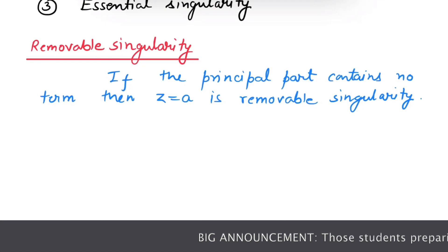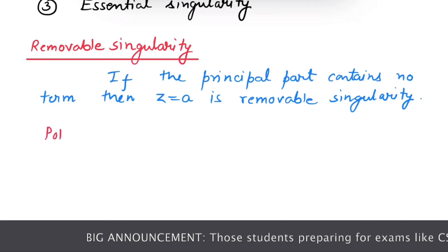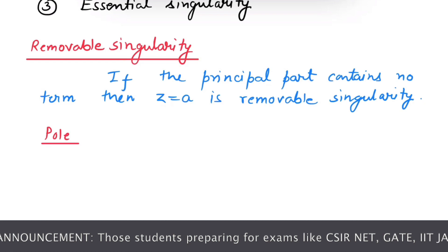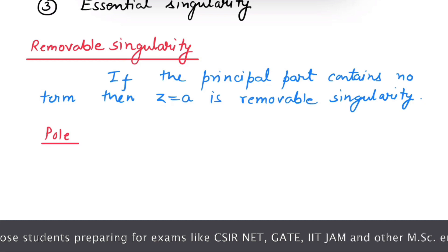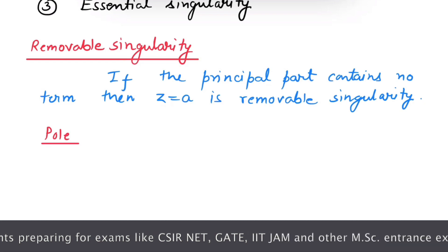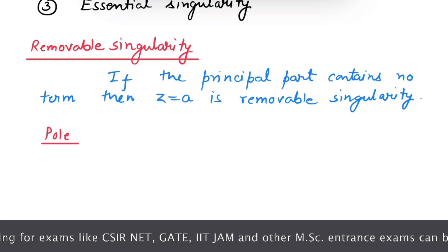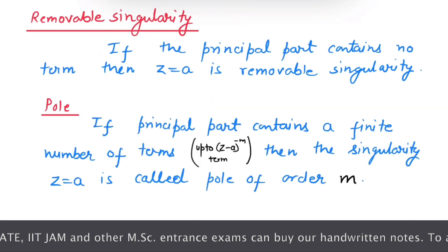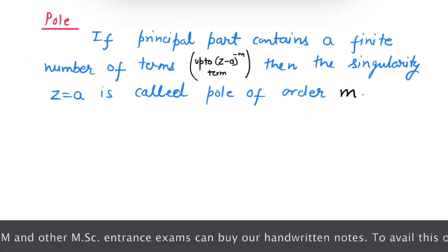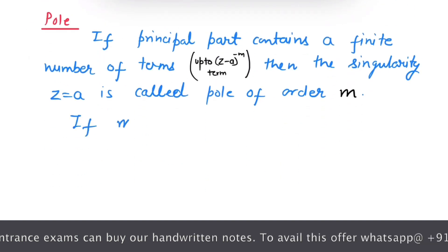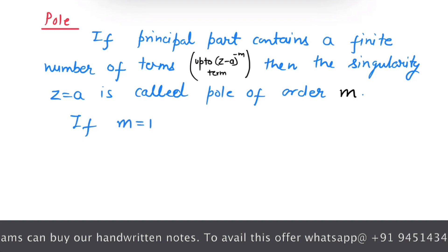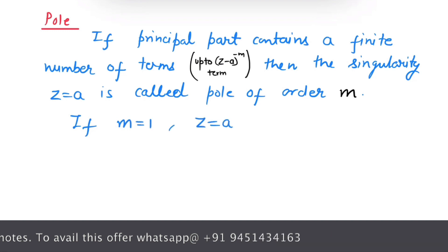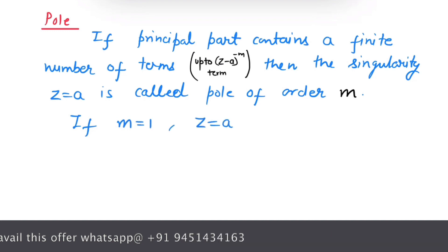Let us see what is a pole. If the principal part contains a finite number of terms, then the singularity z equals to a is called a pole. And if m is 1, then the singularity z equals to a is called a simple pole.